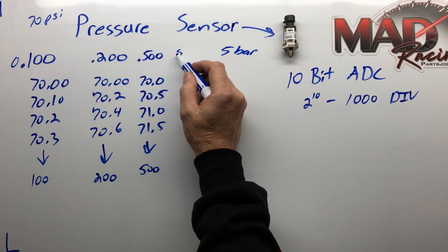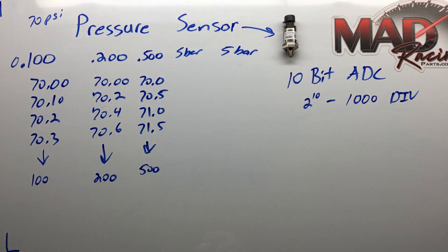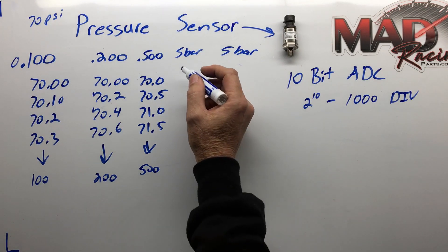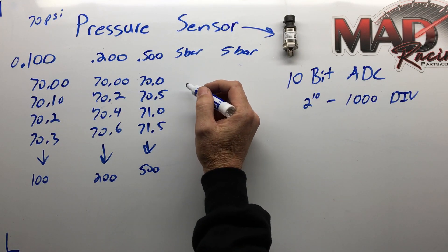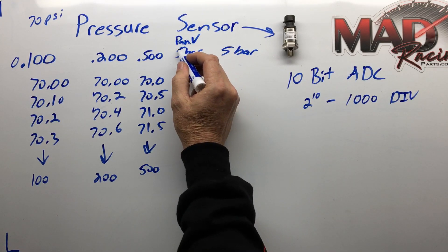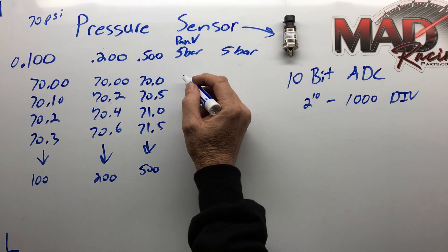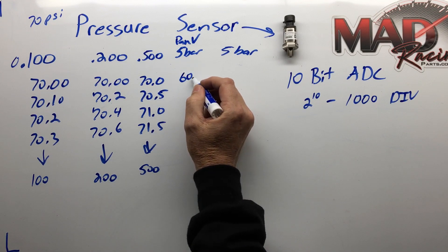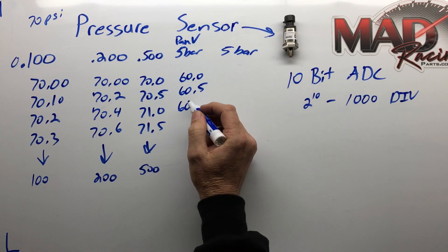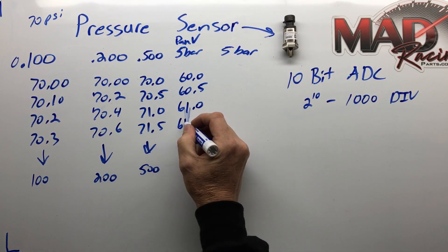You want to run pan back? Use a five bar for that too. This five bar is 500 kPa, so that means you're going to go in one half of one kPa increments. Let's say we're looking at pan back and we used a five bar. That five bar is going to be able to report a pan back of 60, 60.5, 61, and 61.5.